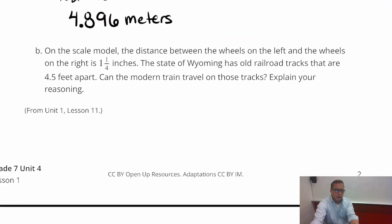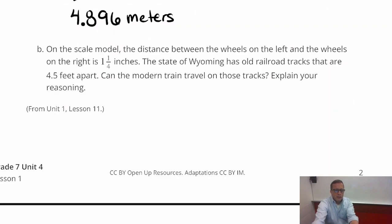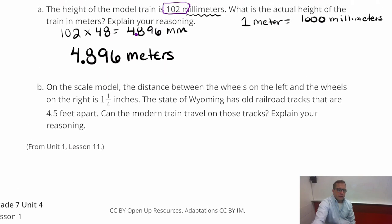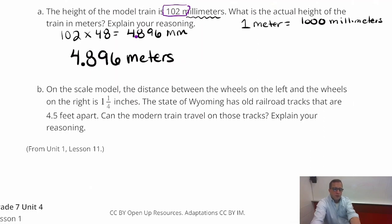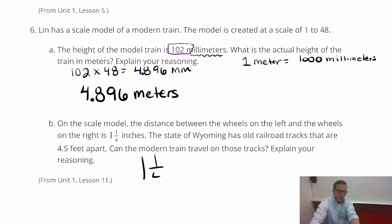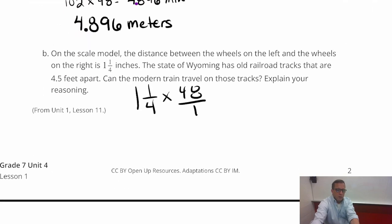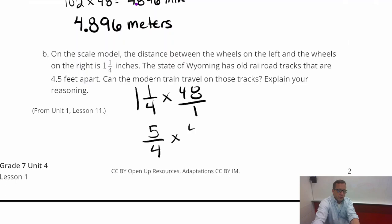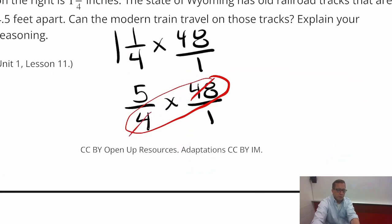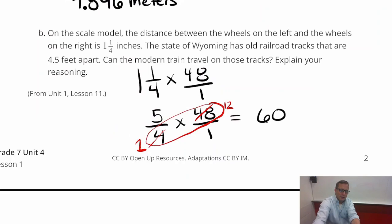So for B on the scale model, the distance between the wheels on the left and the wheels on the right is one and a quarter inches. The state of Wyoming has old railroad tracks that are four and a half feet apart. Can the modern train travel on those tracks? Explain your reasoning. So I'm just going to do one and one-fourth times the scale. So we're going to do one and one-fourth times 48, which is going to be five-fourths times 48. Now, don't flip anything. Don't change anything to division or anything. This is just a straightforward multiplication problem. So I like to do cross-cancelling if it shows. So this turns into a one and 48 divided by four is 12. So you get 12 times five is 60.